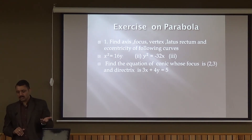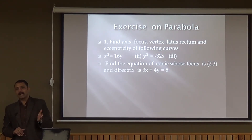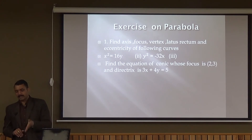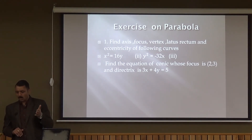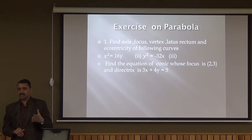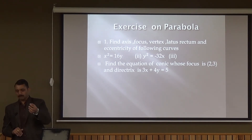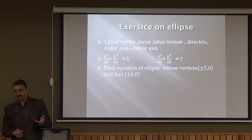Another question: y² = −32x. Here the degree of x is 1, so the parabola lies on the x-axis. The negative sign indicates it is a left-hand parabola. By the same procedure, we can find the axis, focus, vertex, and latus rectum. For a question asking to find the equation of a conic given its focus and directrix, we use the algebraic definition: PS = e·PM. We consider a point P(x, y), find PS and PM, and set PS = e·PM — that gives the required equation of the parabola.